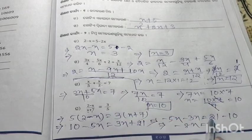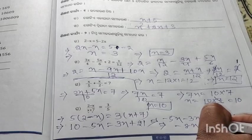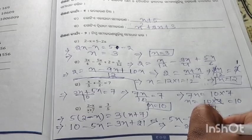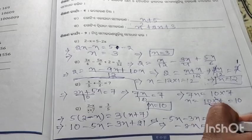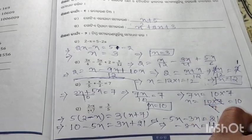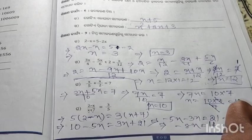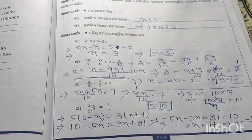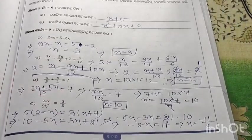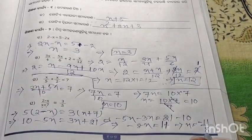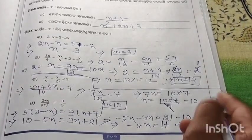So if we have 21 minus 10, we have 11. So we have 11 by 8, so we have minus 11 by 8.